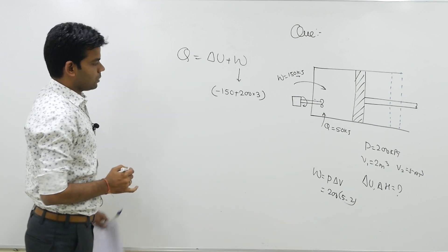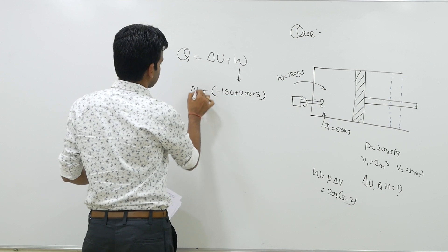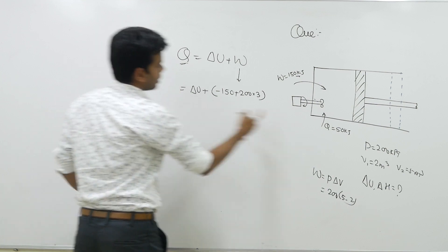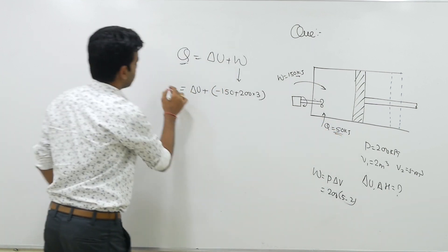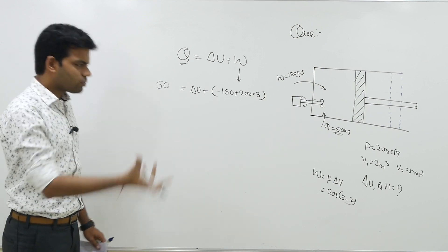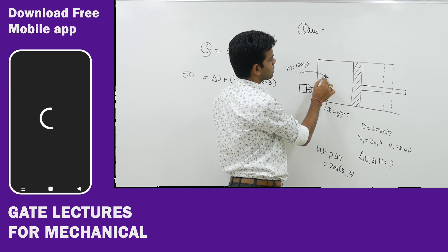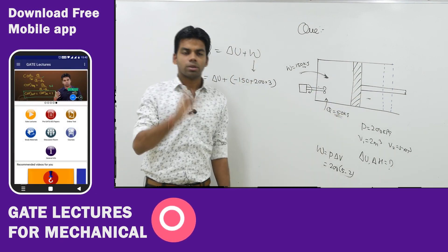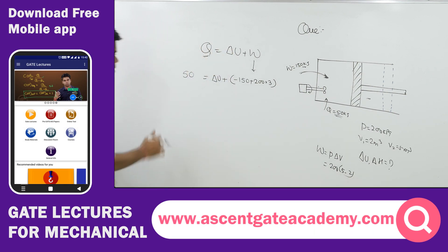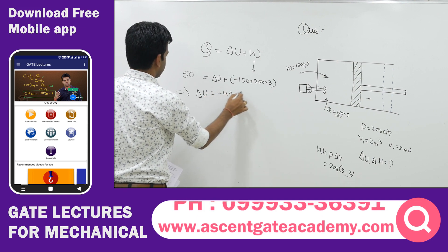So the displacement work done by the system is 200 into 3 equals 600 kilojoule. Now solving for ΔU: it equals Q minus W. Heat transfer to the system is 50 kilojoule (positive). Paddle wheel work is done on the system (negative, −150 kJ) and displacement work is done by the system (positive, +600 kJ). From here, ΔU works out to minus 400 kilojoule.